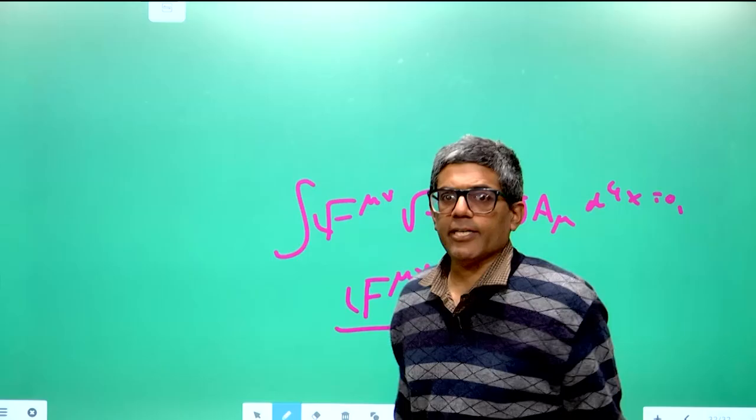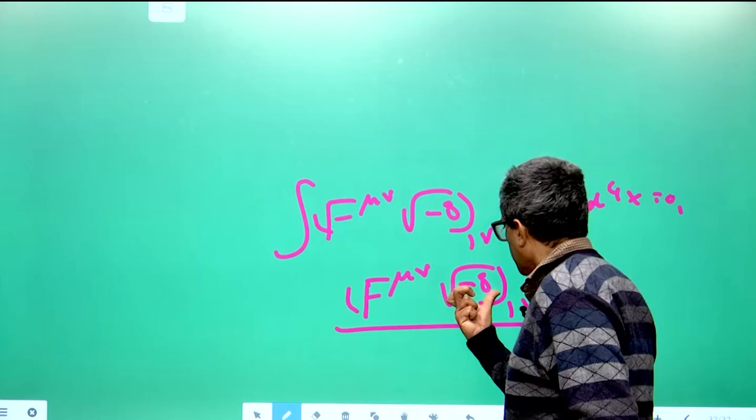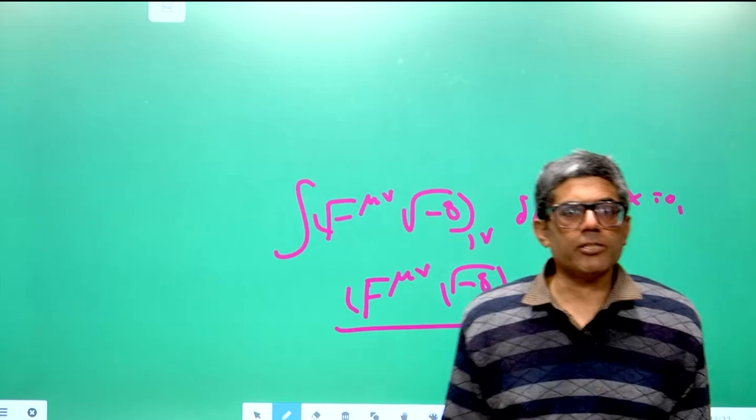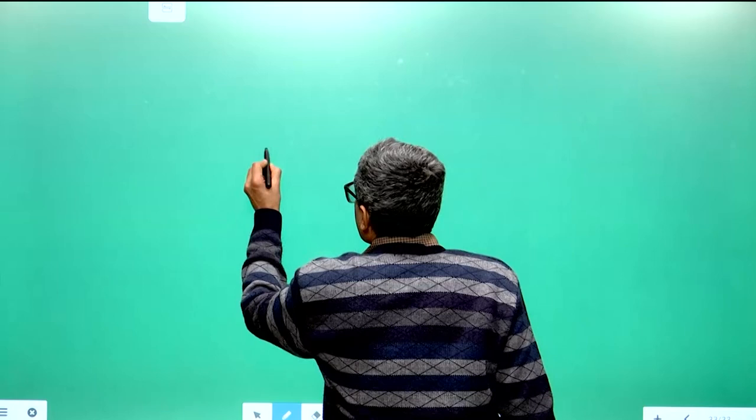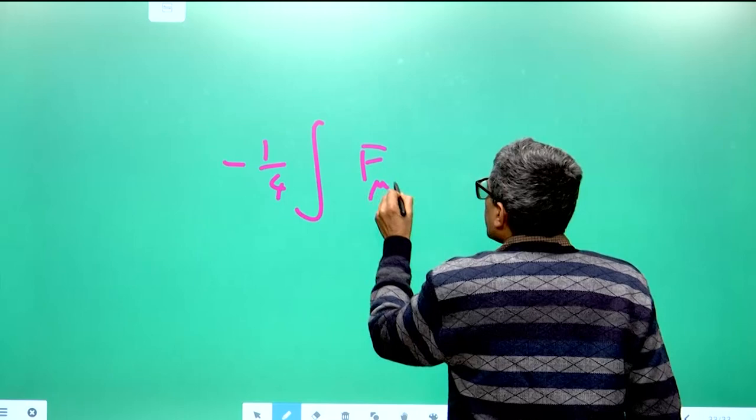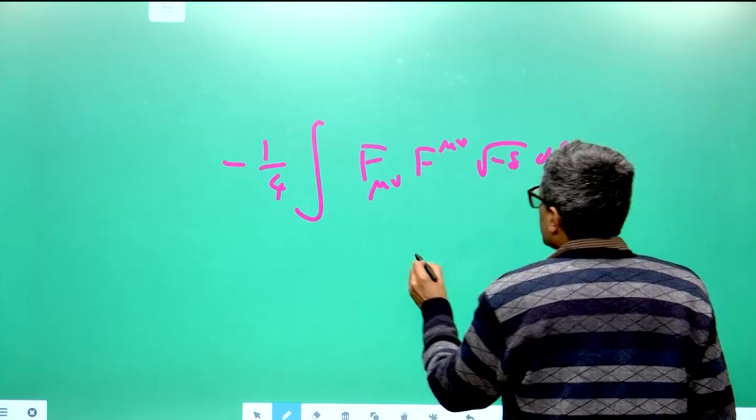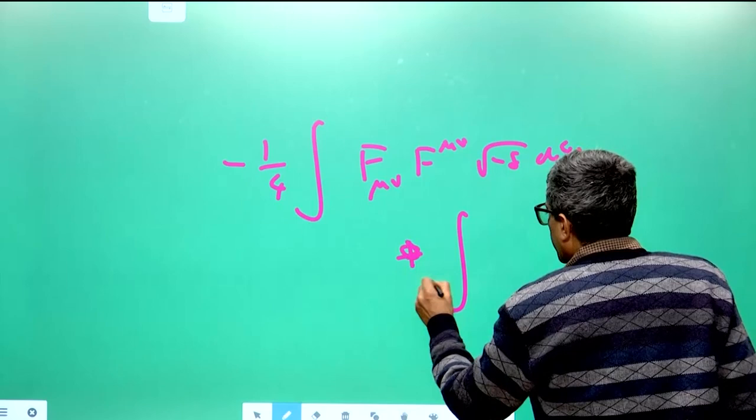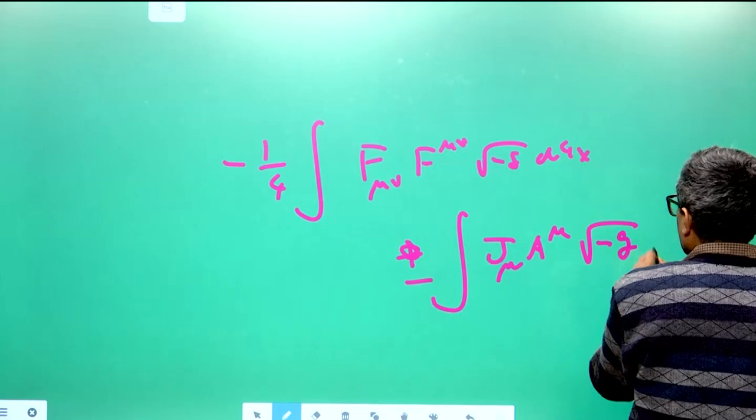You can also derive this when charge density and current density are present by adding the interaction term −j^μ A_μ √(−g) d⁴x to the action. The total action becomes S = ∫[−¼ F_μν F^{μν} − j^μ A_μ] √(−g) d⁴x. One includes the j^μ A_μ coupling term to represent the interaction between the current and the electromagnetic potential in a covariant manner.